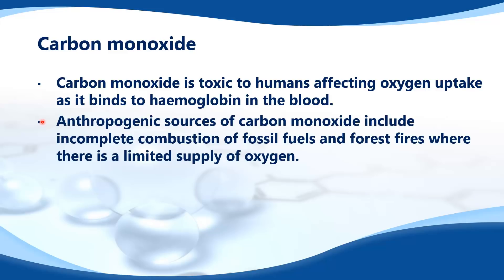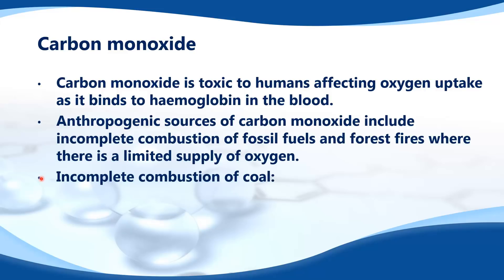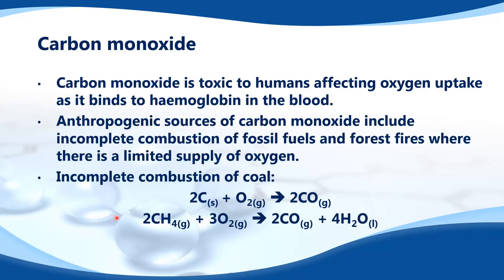Anthropogenic sources of carbon monoxide include incomplete combustion of fossil fuels and forest fires where there is a limited supply of oxygen. From the incomplete combustion of coal, carbon reacts with oxygen to give carbon monoxide. We can also have incomplete combustion of alkanes — in this case methane (CH4) — producing carbon monoxide.